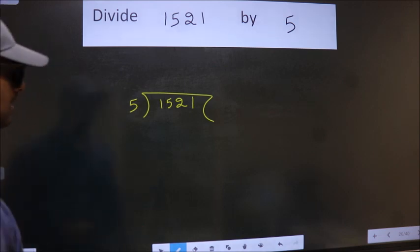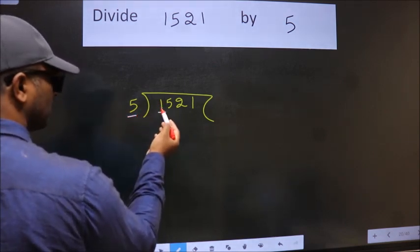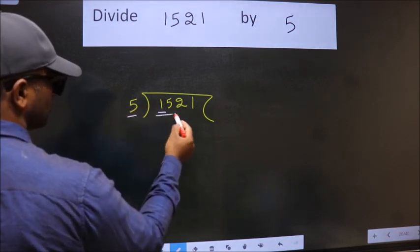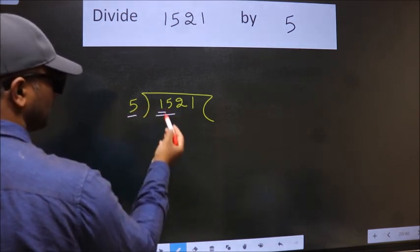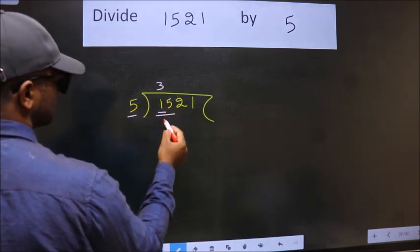Next, here we have 1. Here 5. 1 is smaller than 5, so we should take two numbers: 15. When do we get 15 in the 5 table? 5 times 3 is 15.